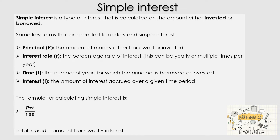The division by 100 comes from the interest rate always being written as a percentage. So P times R times T, your principal multiplied by your interest rate multiplied by the time, all over 100, equals your interest. This is the simple interest formula. The total to be repaid is the amount that you borrowed plus the interest.